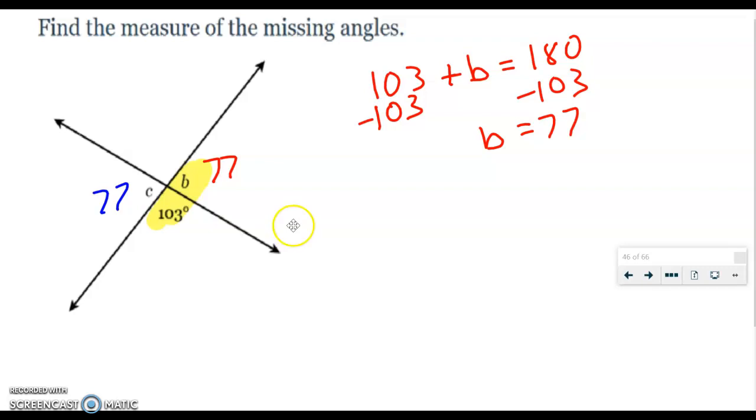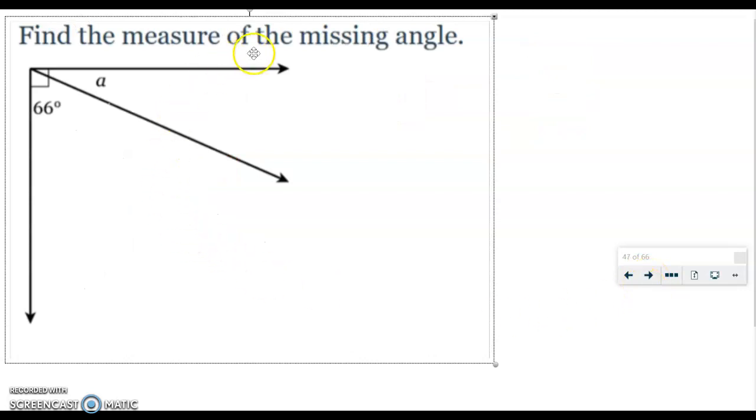Okay, let's take a look at another example. Alright, here it says find the measure of the missing angle. We have angle A here and we have this angle, which is 66 degrees.